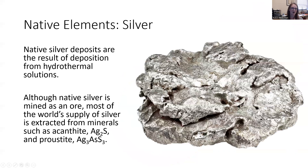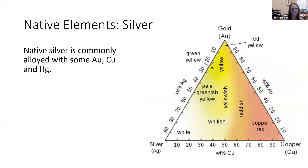Much like gold, humans have also had a fascination with silver. Native silver deposits, just like gold, are often the result of hydrothermal solutions formed as they rise up to shallower depths. Although native silver is mined as an ore, most of the world's silver doesn't come from native silver — it actually comes from silver bonded to other elements in minerals such as acanthite or proustite. Silver is often mixed with either gold or copper.